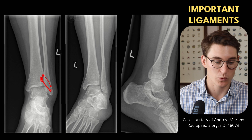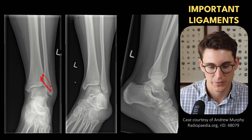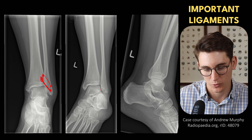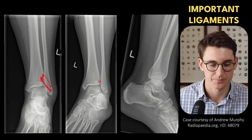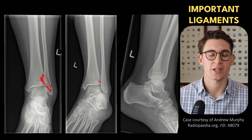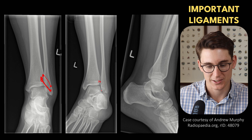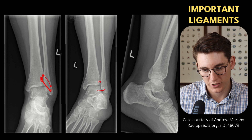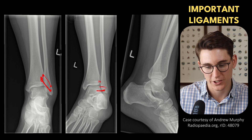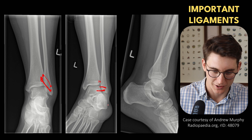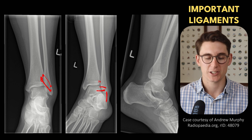We can get disruption of those ligaments without or with breaking bones, which would increase the space between the tibia and fibula. We want to make sure this joint space is the same, especially on our mortise view — we don't want the distance between the tibia and fibula to be more than five millimeters. Laterally, we have ligaments coming from the fibula towards the talus. A ligament running from the talus to the fibula anteriorly — that's our anterior talofibular ligament. Posteriorly, we have a posterior talofibular ligament. We also have a ligament from the calcaneus to the fibula — that's our calcaneofibular ligament.